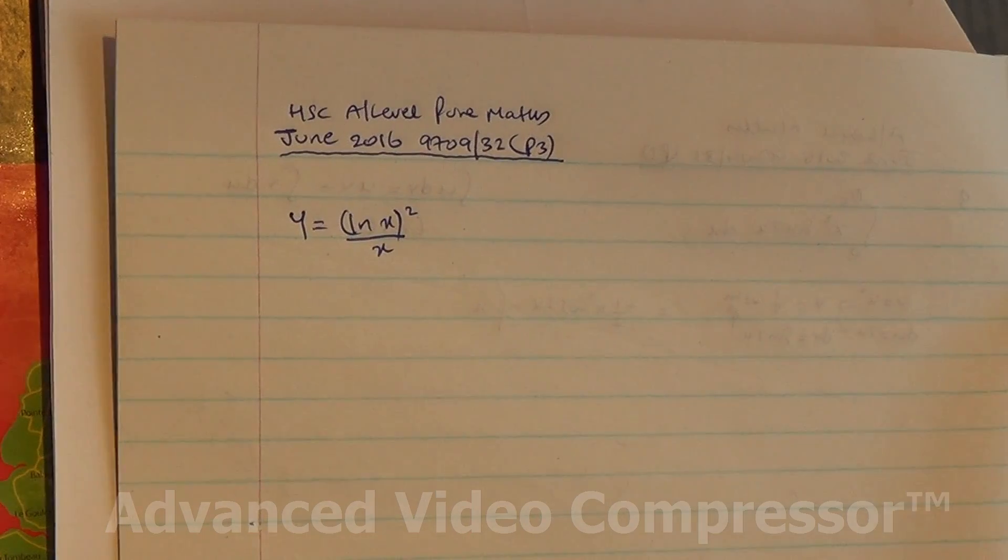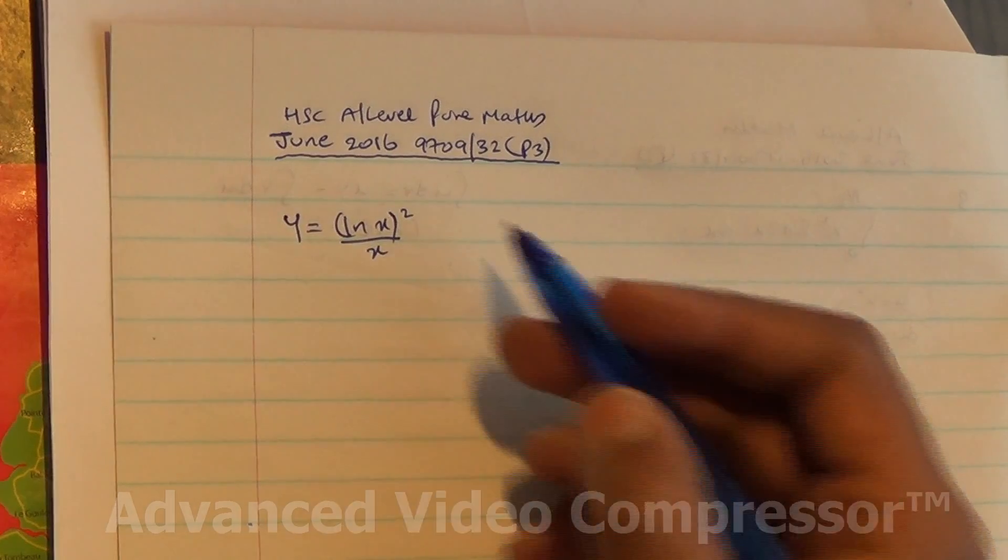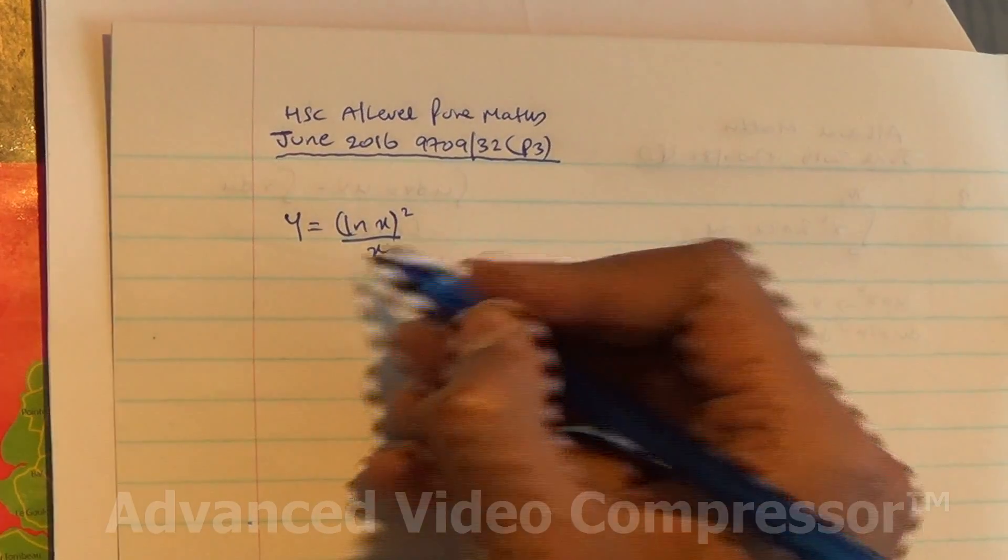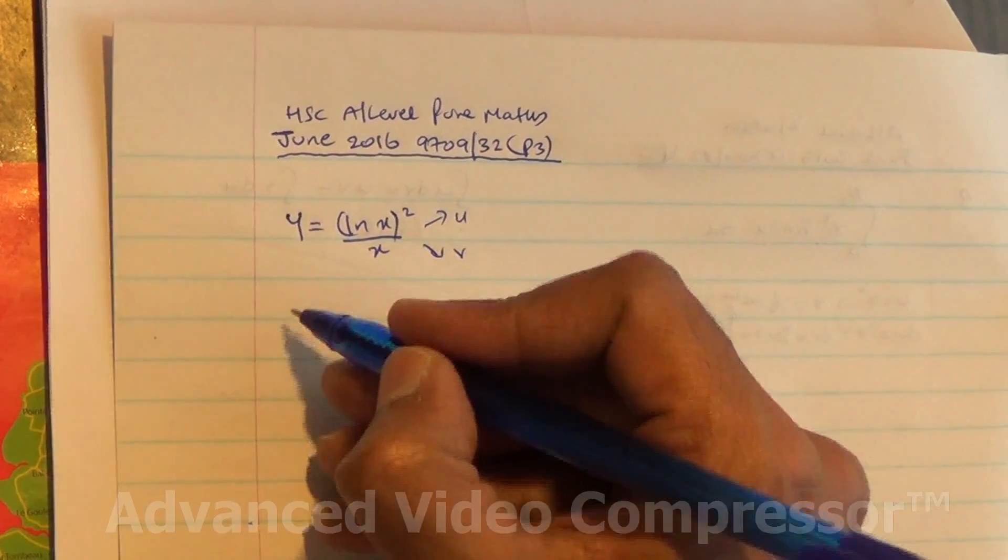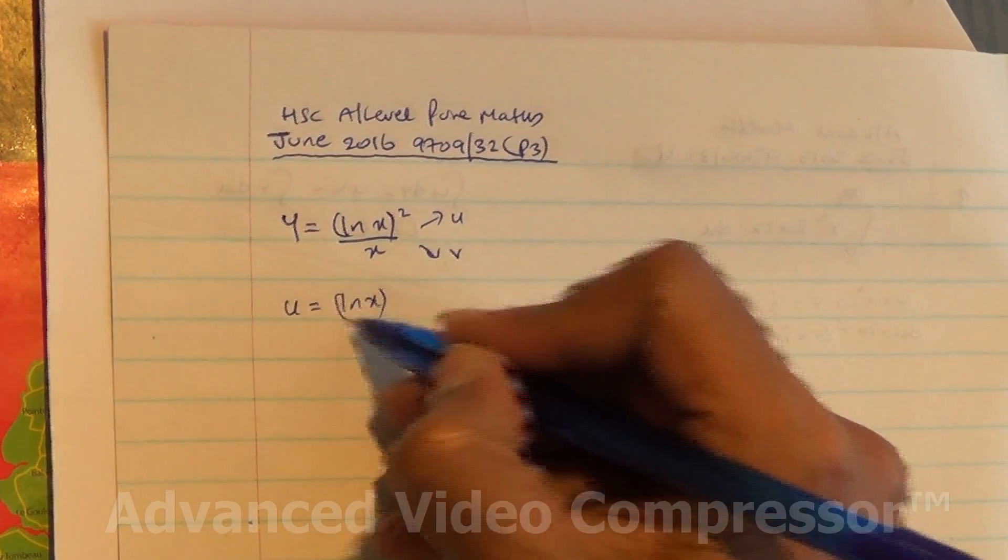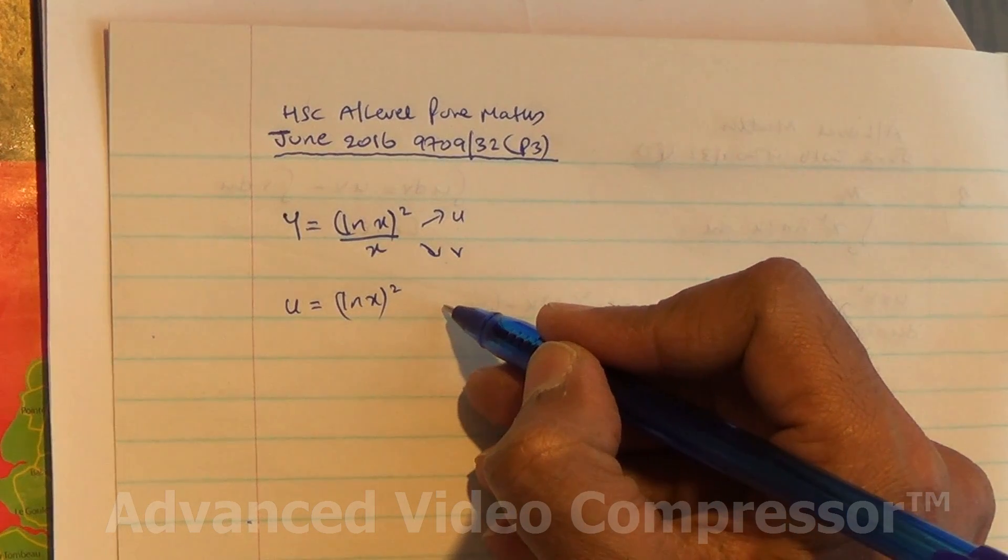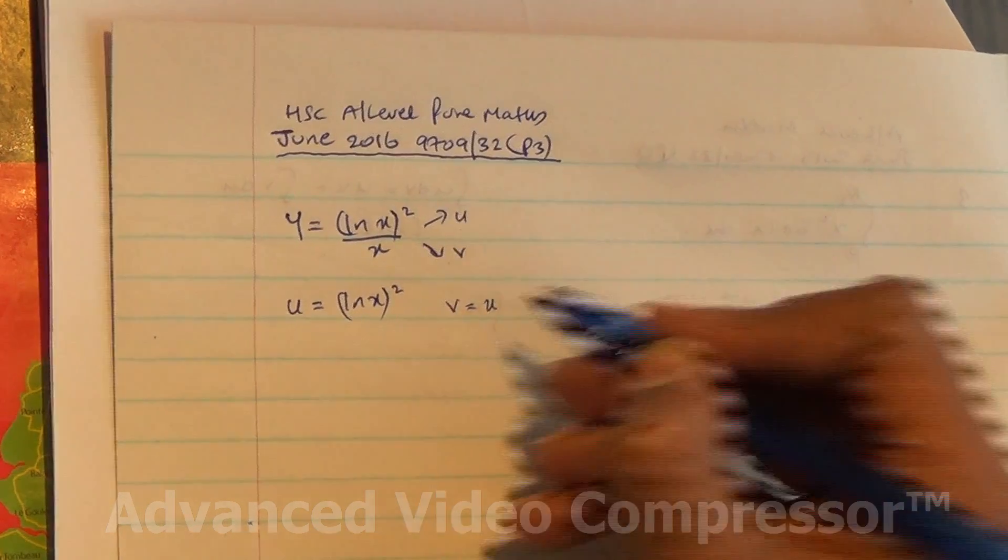So this is the question. We're going to differentiate this using the quotient rule. This is u, this is v. Therefore u equals (ln x)², and v equals x.